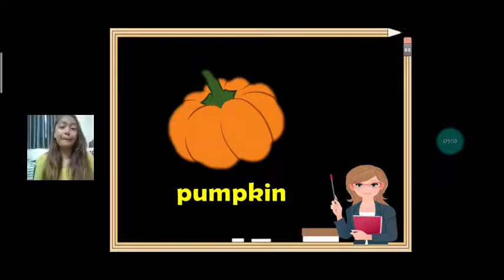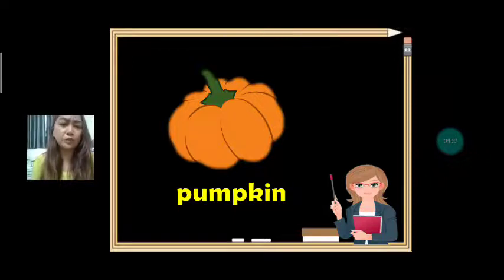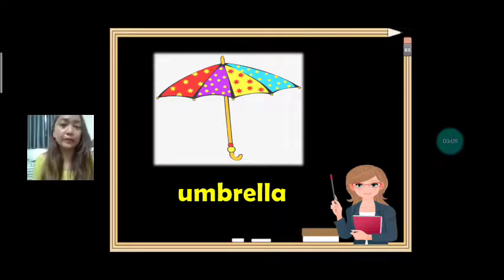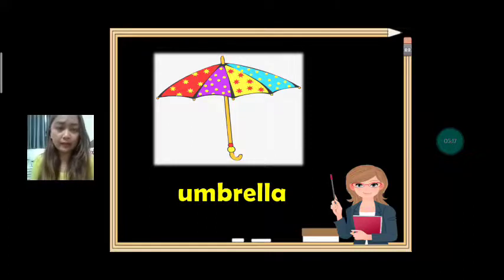Next we have pumpkin. Pumpkin starts with letter P. What article are we going to use? A. The last one we have is umbrella. Umbrella starts with letter U. What article are we going to use — A or AN? It's AN.